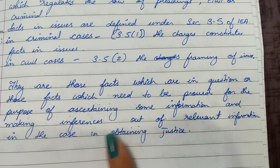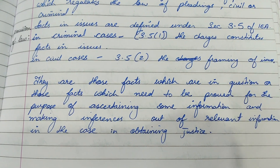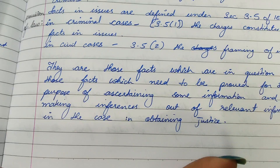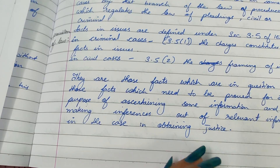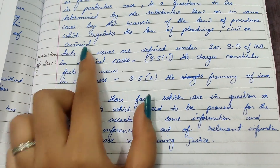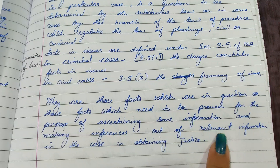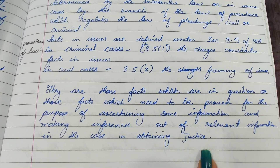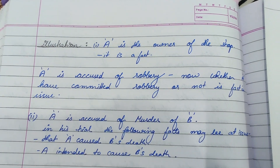For the purpose of ascertaining information and making inferences out of relevant information, in order to obtain justice — in any case, justice must be provided. To provide justice, the issues framed or charges leveled must receive a correct answer. That answer comes when all relevant facts and facts in issue are connected, producing correct inferences on which justice can be based.